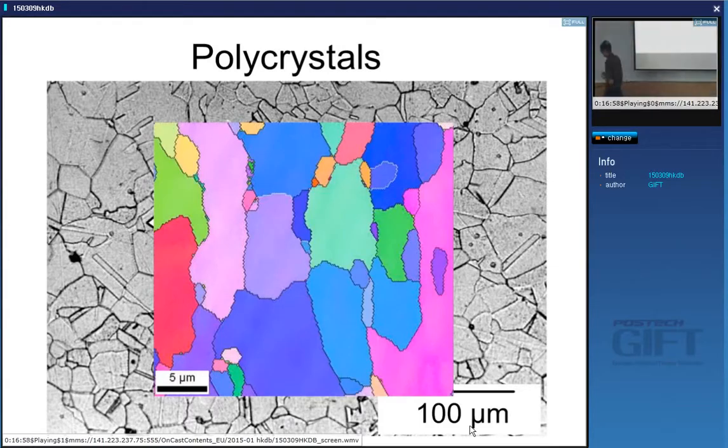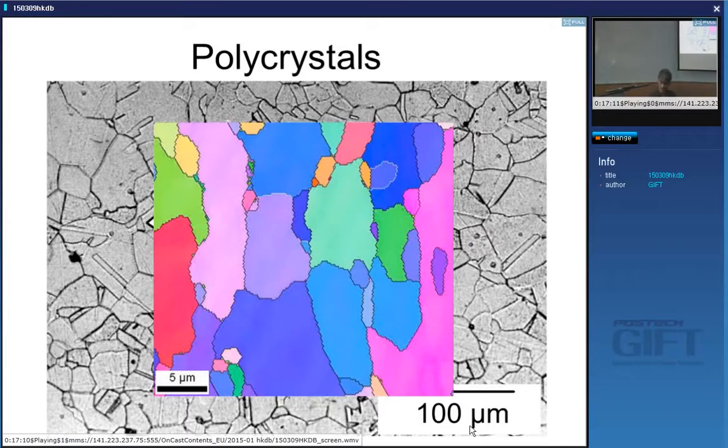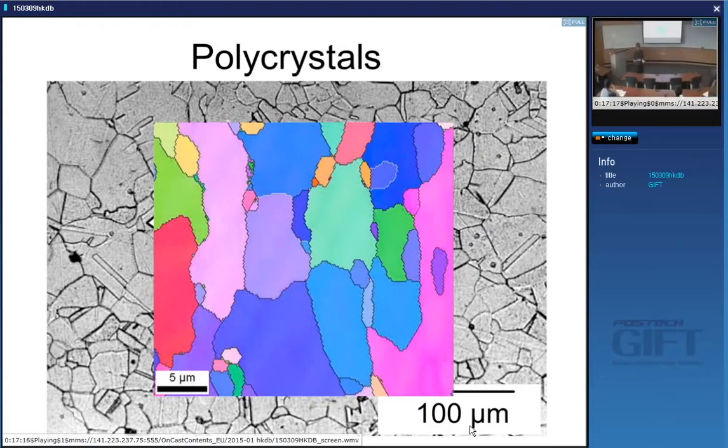These pictures are now very common. The micrograph that I showed you first gives you the shape of the crystals and the size of the crystals, but it doesn't tell you anything about the orientation of the crystal. Here, the colors represent different crystal orientations. Now you not only have the shape of the crystal, the size of the crystal, but also its crystallographic orientation.